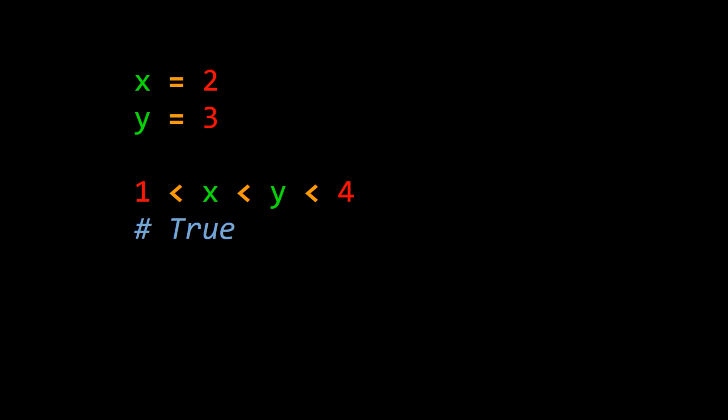Say we assign the values 2 and 3 to x and y, and then look at a single statement that includes several comparison operators chained together: 1 less than x less than y less than 4. In Python, this evaluates to true.